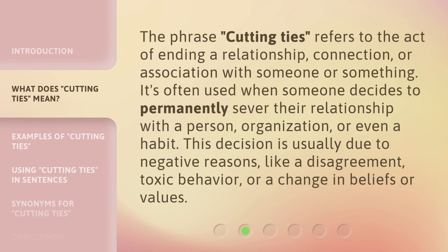The phrase 'Cutting Ties' refers to the act of ending a relationship, connection, or association with someone or something. It's often used when someone decides to permanently sever their relationship with a person, organization, or even a habit. This decision is usually due to negative reasons, like a disagreement, toxic behavior, or a change in beliefs or values.